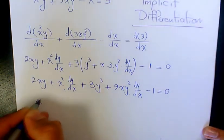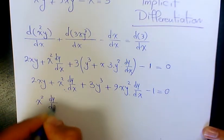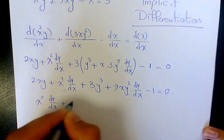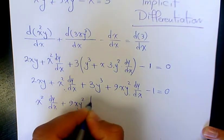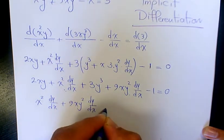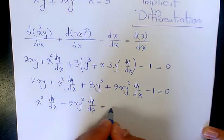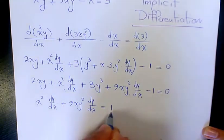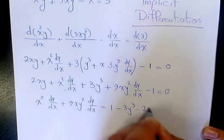So it's going to be x squared dy over dx plus 9xy squared dy over dx equals 1 minus 3y cubed minus 2xy.